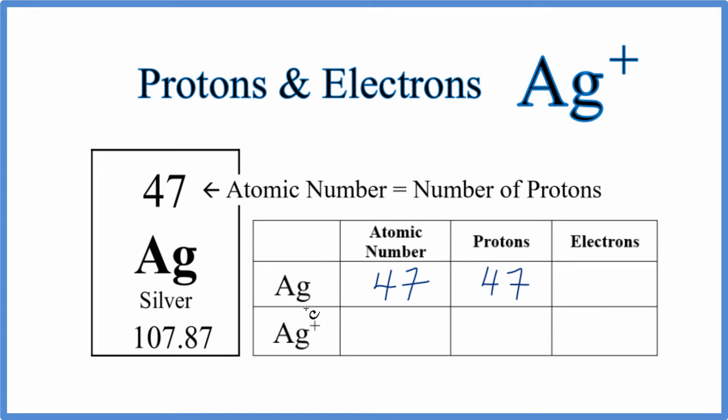When we talk about ions, and this here is a neutral element, the only difference is going to be in the number of electrons. So we could write 47 as the atomic number for Ag+, and that would mean the number of protons would be 47 as well. It's the electrons that's going to be different with an ion.